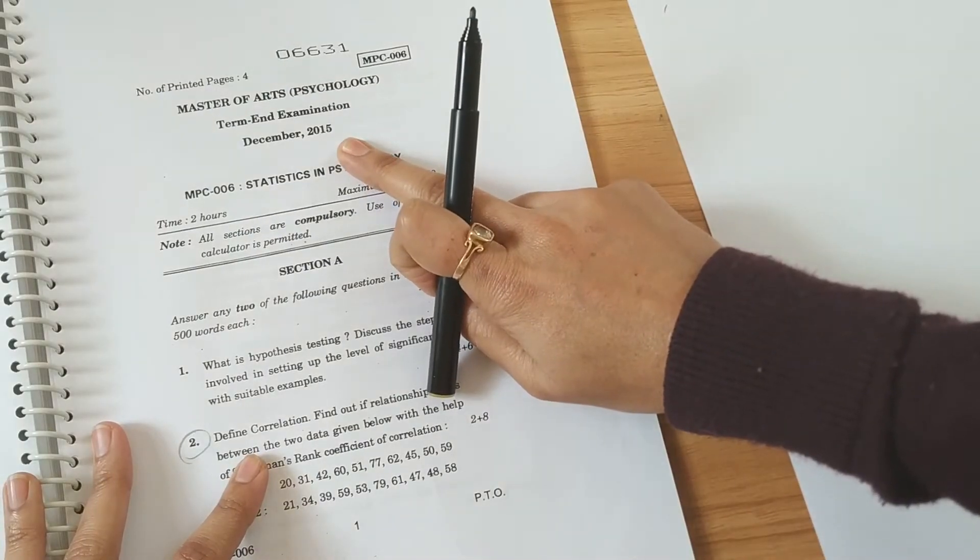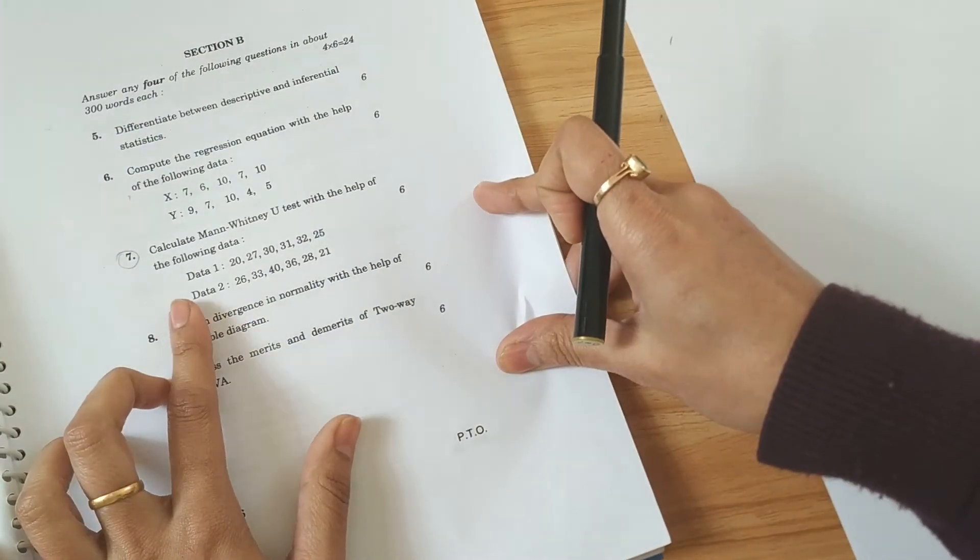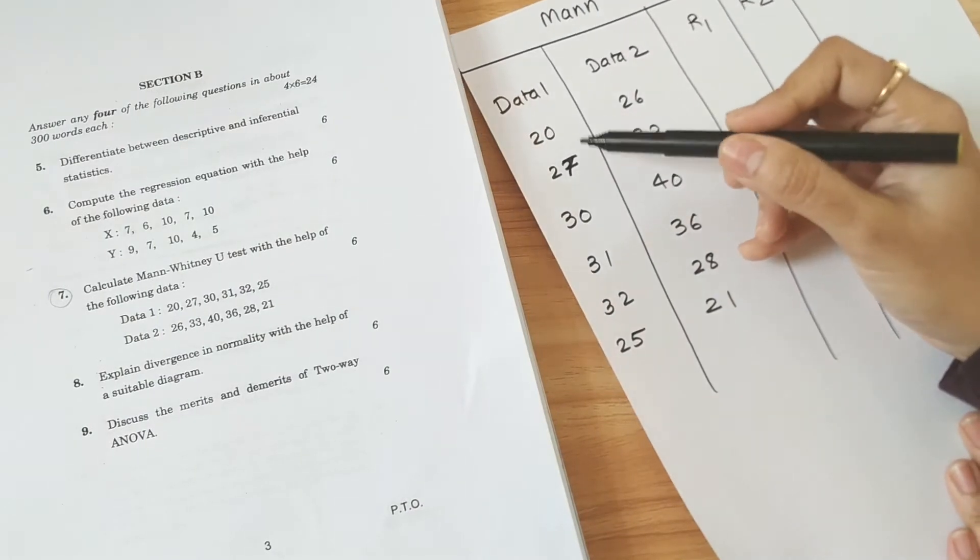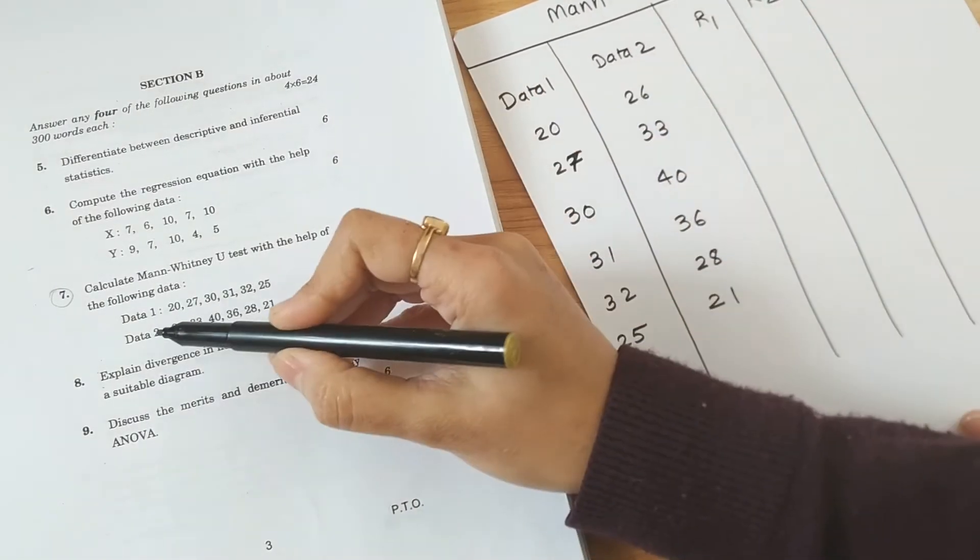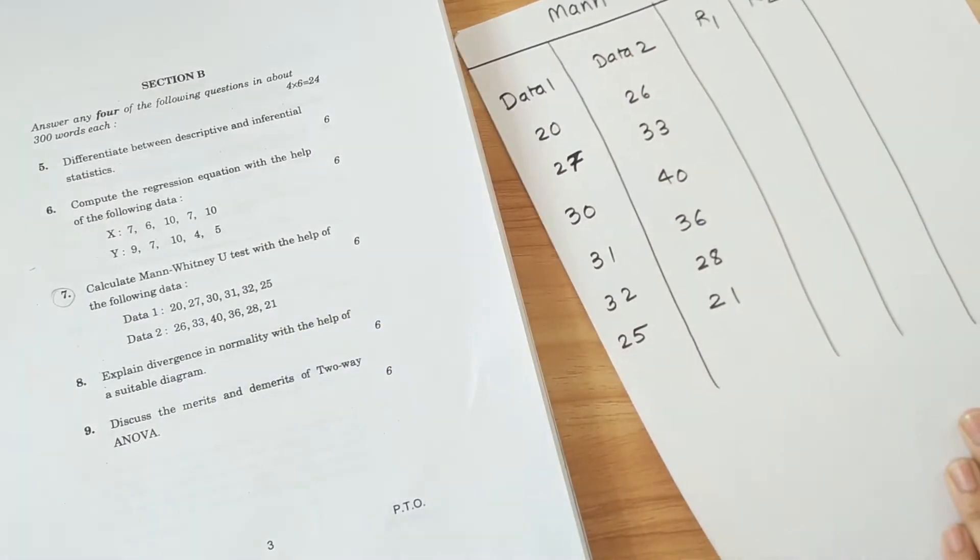This is the December 2015 question paper and this is the seventh question. Now I have written down the data elements. These are horizontal. I have written down vertically.